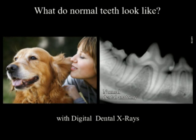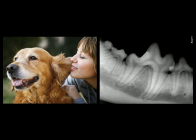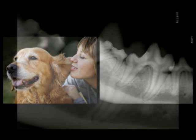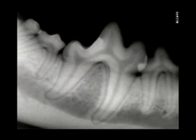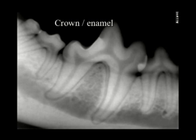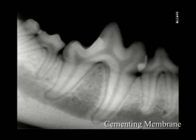What does a normal tooth look like? With digital x-rays we can see quite a lot. Let's take a closer look. Here we can clearly see the root, the crown and enamel of the tooth, the pulp where the nerves and vessels are, the cementing membrane, and even a porous dentin.